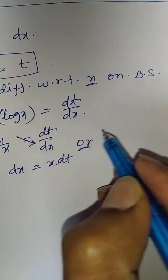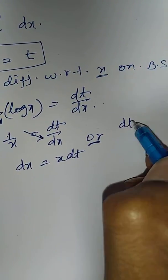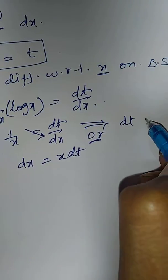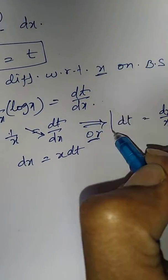Or we can write this as dt. From this, dt is equal to dx by x.